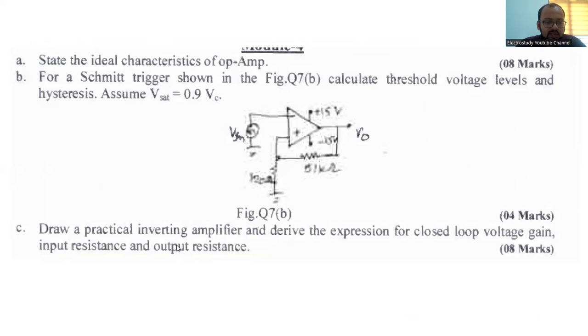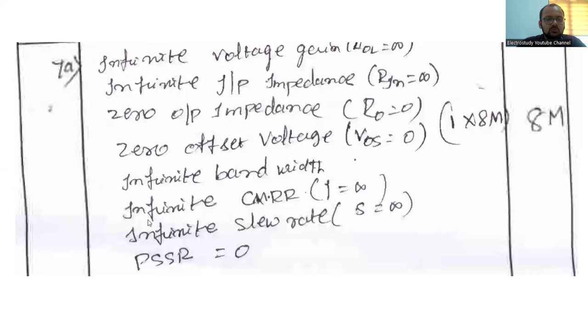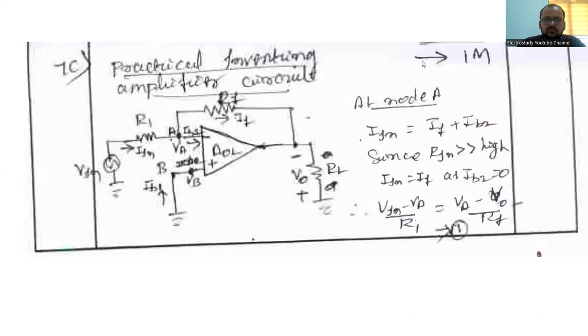Question number 7C. Draw a practical inverting amplifier and derive the expression for closed loop voltage gain, input resistance and output resistance. Somewhat simple derivation. First of all, it is advisable to draw an inverting amplifier. Op-amp inverting amplifier you can draw. Here we can see the RF feedback resistance. R1 is the input resistance. We are giving the supply to inverting terminal. Non-inverting terminal you can keep blank. RL is the load. Now you can use KVL and KCL. Using the KVL and KCL you can proceed with that.